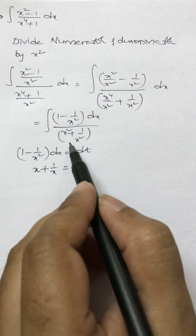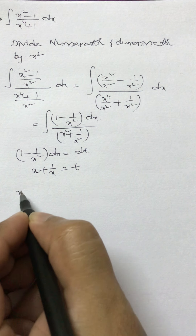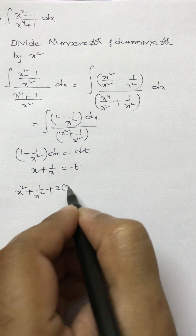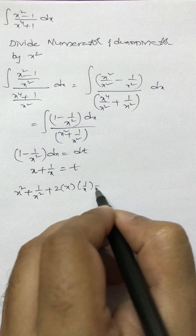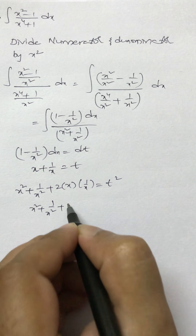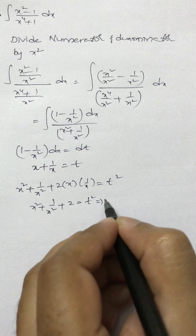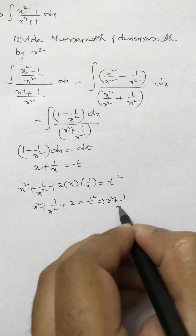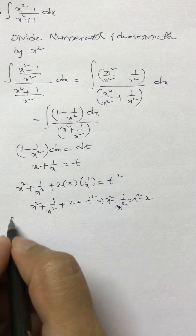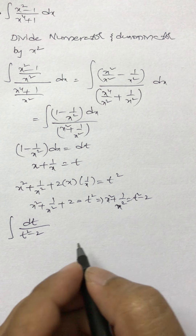We still have x² + 1/x² in the denominator. Squaring t = x + 1/x gives x² + 1/x² + 2·x·(1/x) = t², so x² + 2 + 1/x² = t², which means x² + 1/x² = t² - 2. Therefore our integral becomes ∫dt/(t² - 2).